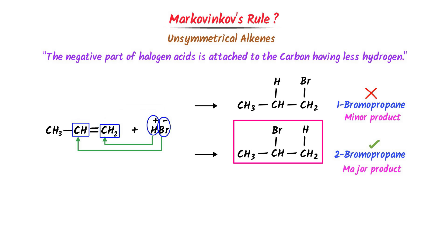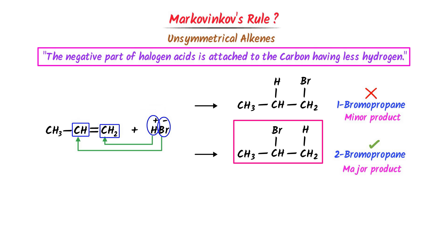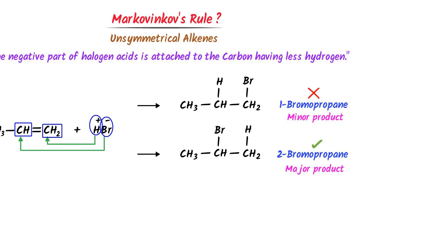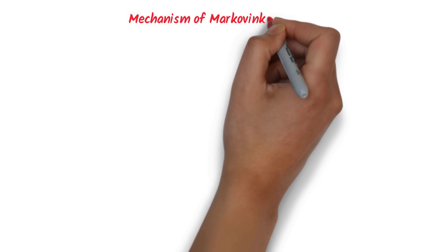To summarize this whole concept: Markovnikov's rule states that the negative part of acid halogen — like negative bromine — is attached to the carbon having the less number of hydrogen atoms. Now let me teach you the mechanism of Markovnikov's rule.